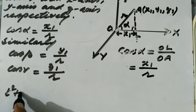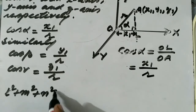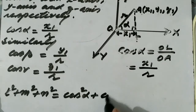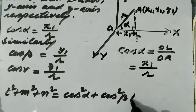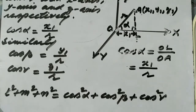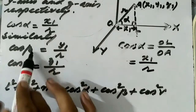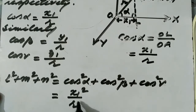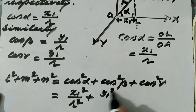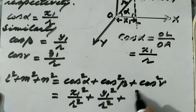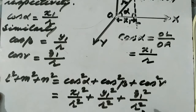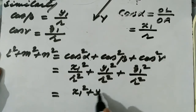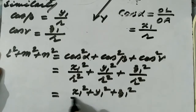So L² + M² + N² = cos²α + cos²β + cos²γ = (X1²/R²) + (Y1²/R²) + (Z1²/R²). Taking R² as common denominator, we have (X1² + Y1² + Z1²) / R².